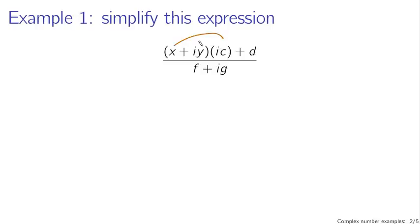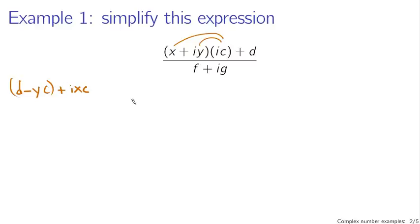This is pretty easy — it's a simple distribution. We're going to have x times ic, that's going to be a complex part, so I'm going to write that as ixc. And then we're going to have iy times ic, which is going to be minus yc — that's going to be real. We also have a real part in the numerator from the d, so I'm going to write this as d minus yc plus ixc. That's the result of multiplying this out, and that's then going to be divided by f plus ig.